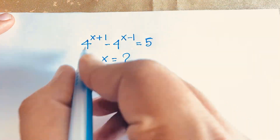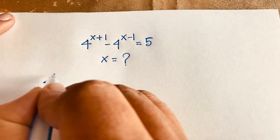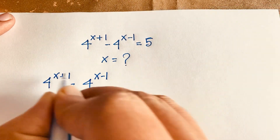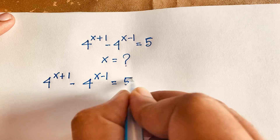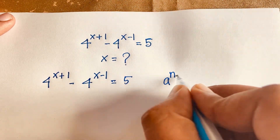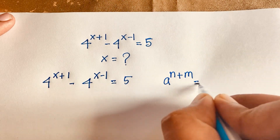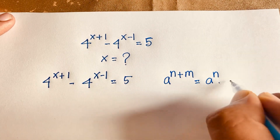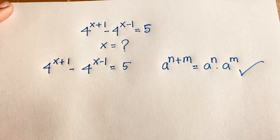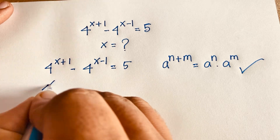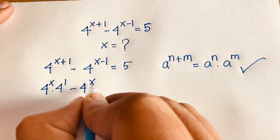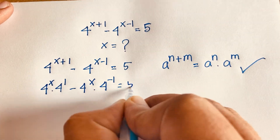Our question is 4 to the power x+1 minus 4 to the power x−1, equal to 5. We know the exponential law: a to the power n+m equals a to the power n times a to the power m. According to this law, I can rewrite this expression as 4 to the power x times 4 to the power 1, minus 4 to the power x times 4 to the power negative 1, equals 5.